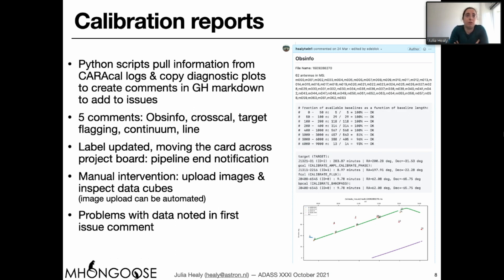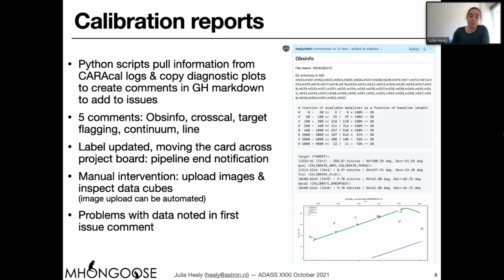Along with uploading the images, whoever has been assigned this track is in charge of checking the calibration. If there are any issues noted with the data, they can be documented in the top comment of the issue so we can clearly see what those issues might be. If all is good with the data, it gets a 'calibration good' label. If the HI is good, it gets an 'HI good' label. If it needs more attention, we have a series of labels for that.